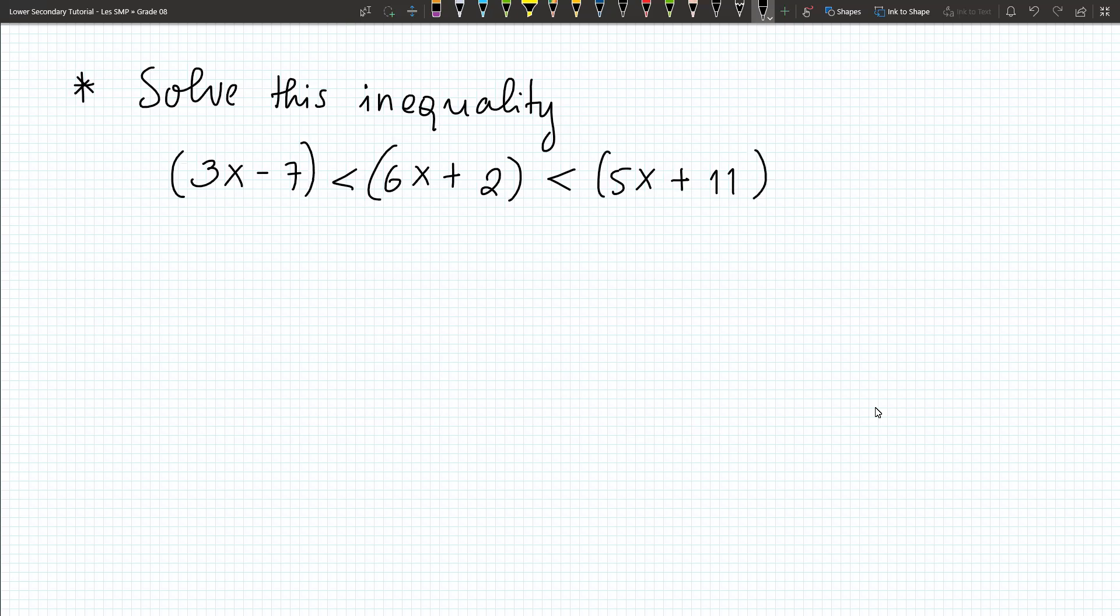We can do this by thinking there are two parts that we can solve. The first part is 3x minus 7 smaller than 6x plus 2, and the second part is 6x plus 2 is smaller than 5x plus 11.